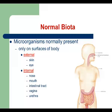Microorganisms are normally present only on the surfaces of our body — external surfaces such as skin, mucous membranes of the eyes, nose, mouth, intestinal tract, vagina, and urethra. Please remember: if microorganisms are found in any other place, for example in the brain, muscle tissue, or the heart of a patient, that is not normal biota. It means the patient has some kind of infectious disease.